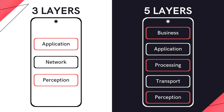Let's now move on to the three-layer and five-layer architectures of IoT. The three-layer architecture consists of the application layer, the network layer, and the perception layer. The five-layer architecture is basically the same, except that it has two extra layers: the business layer and the processing layer.